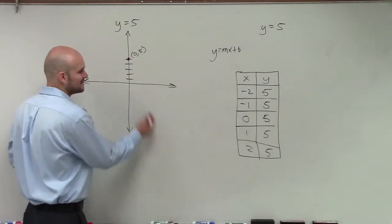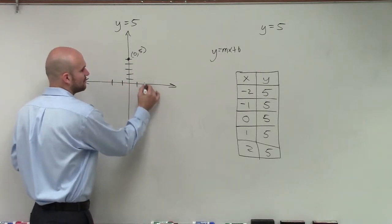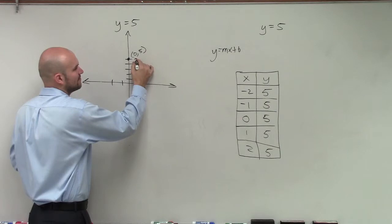So therefore, on graphing this, when I go to negative 1, negative 2, positive 1, positive 2, y simply just equals 5.